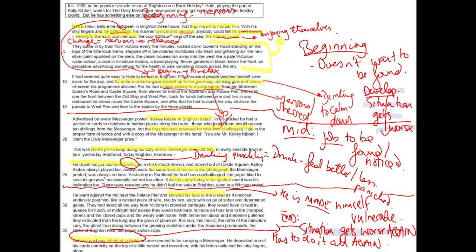He drank even his gin and tonic hastily — developing the key image from before, building that panic again. He wore the same kind of hat as in the photograph, and the Messenger printed it always on time, making him even more of a target. He leans against the rail near the Palace Pier — a change in focus suggesting we're beginning to come towards the end of the narrative extract.